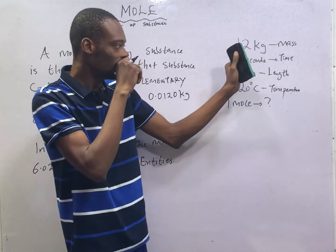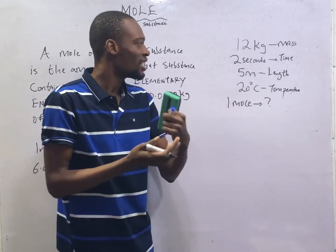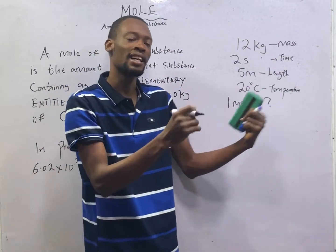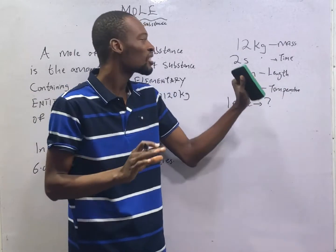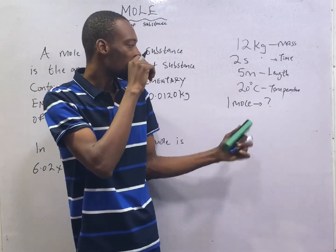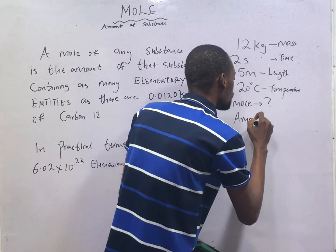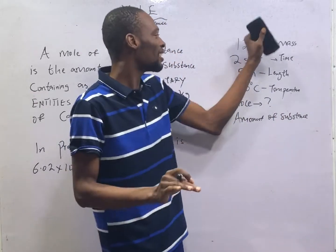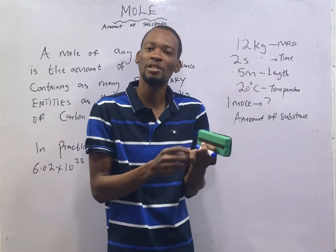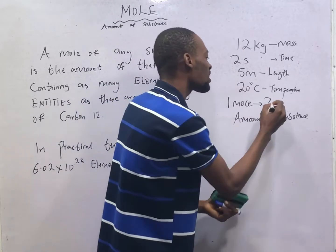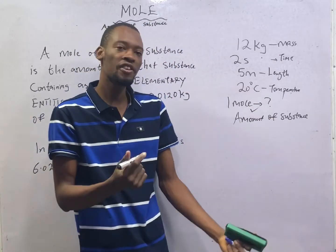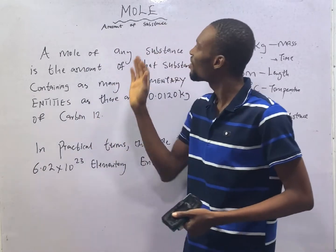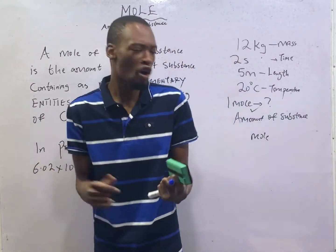Just as kilogram is the unit of mass, second is the unit of time, meter is the unit of length, and degree Celsius is the unit of temperature — we also have temperature in Kelvin and Fahrenheit. Mass can also be in grams, seconds can be in milliseconds, and so on. Mole is the unit for amount of substance. So when you are measuring amount of substance, you don't say kilogram, you don't say seconds, you don't say meters, you don't say degrees Celsius, because these are not the units for measuring amount of substance. The unit for measuring amount of substance is mole — M-O-L-E — or the short form mol. Now that we know that mole is the unit for measuring the amount of substance, what is the definition of mole?